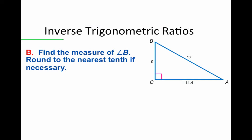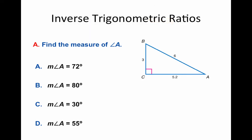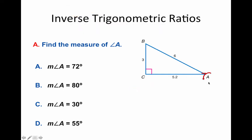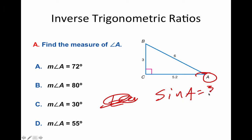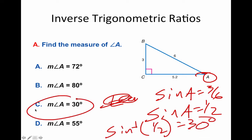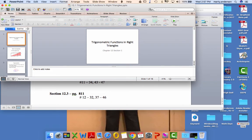For the last example: sine of A = 3/6 = 1/2. When is sine equal to 1/2? That's a special right triangle! The inverse sine of 1/2 is 30°. So this is a 30-60-90 triangle. That's enough for today — enjoy your homework.